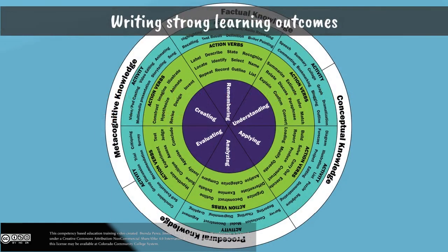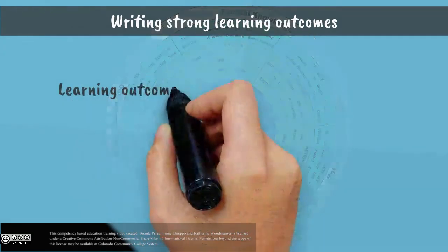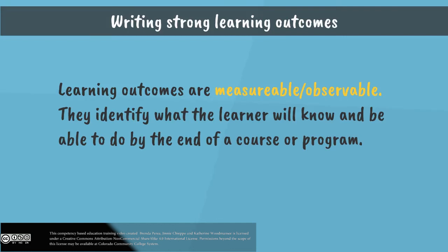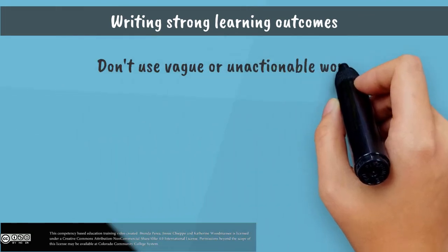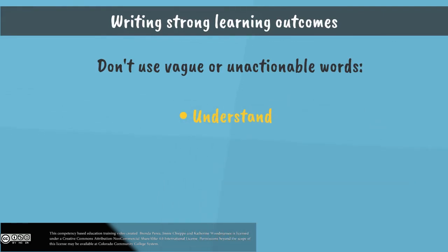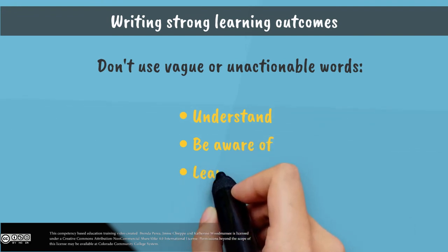When developing learning outcomes, keep in mind that this wheel is not all-inclusive and there might be a better measurable action verb not listed on the wheel. Learning outcomes need to be measurable or observable and identify what the learner will know and be able to do by the end of a course or program. Avoid using vague descriptions like understand, be aware of, learn, or any other non-measurable description.